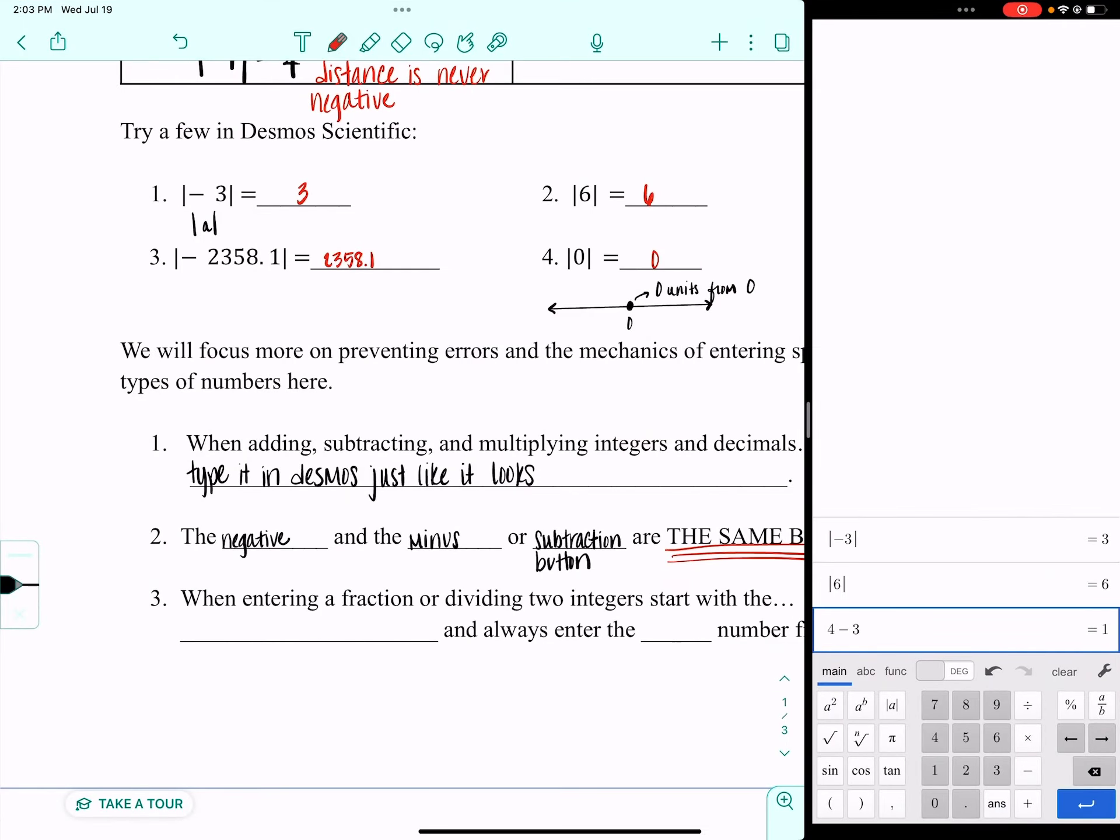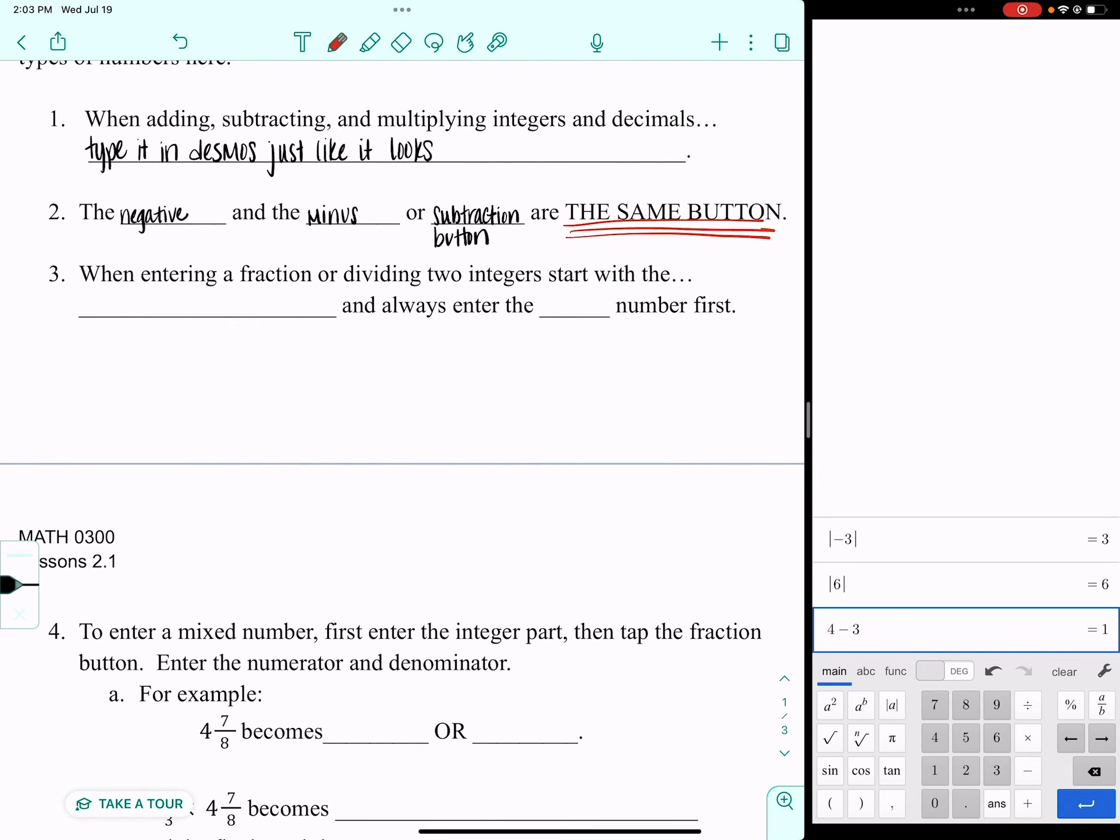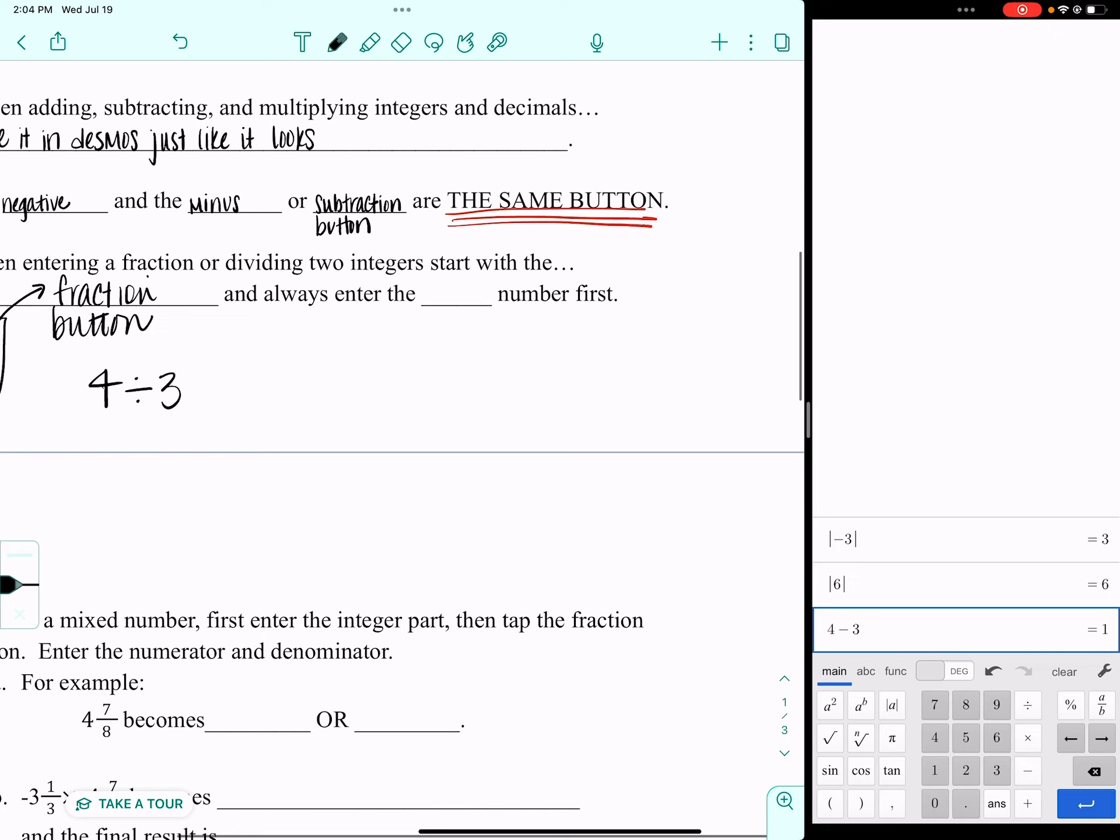One of the features I really like on this Desmos scientific calculator is how easy it makes it to enter a fraction. If you go down to the bottom right-hand corner where the blue enter key is and you go up 1, 2, 3 jumps, you see a button that looks like that. This is going to be one of your best friends. When you enter a fraction or if you have a problem that says 4 divided by 3, this is when you're going to use this button. You're going to start with the fraction button, and you are always going to enter the top number first if it's in fraction form, the first number first if it's in division form.